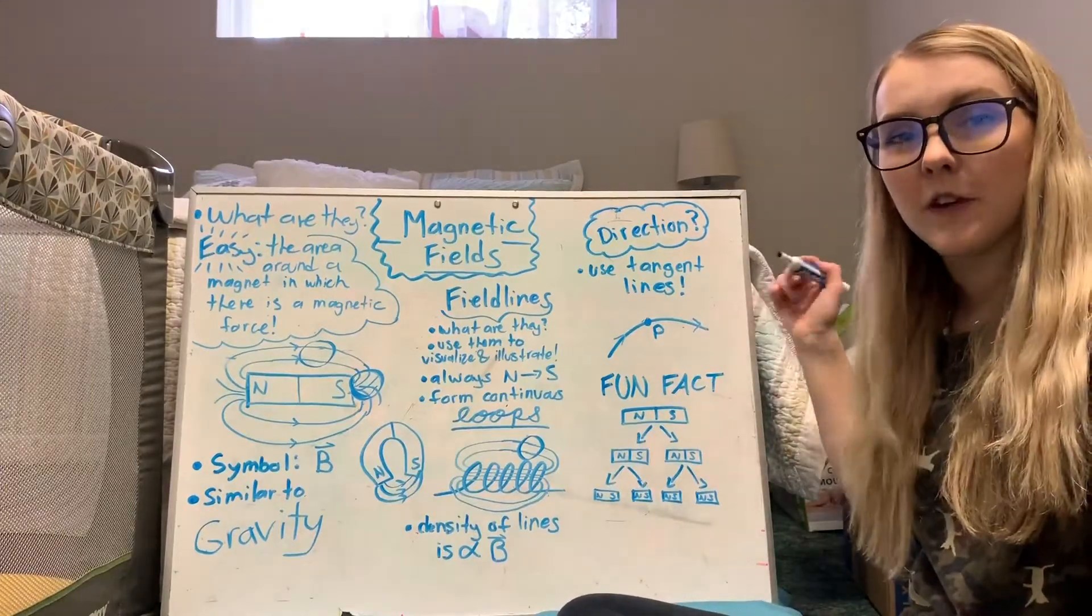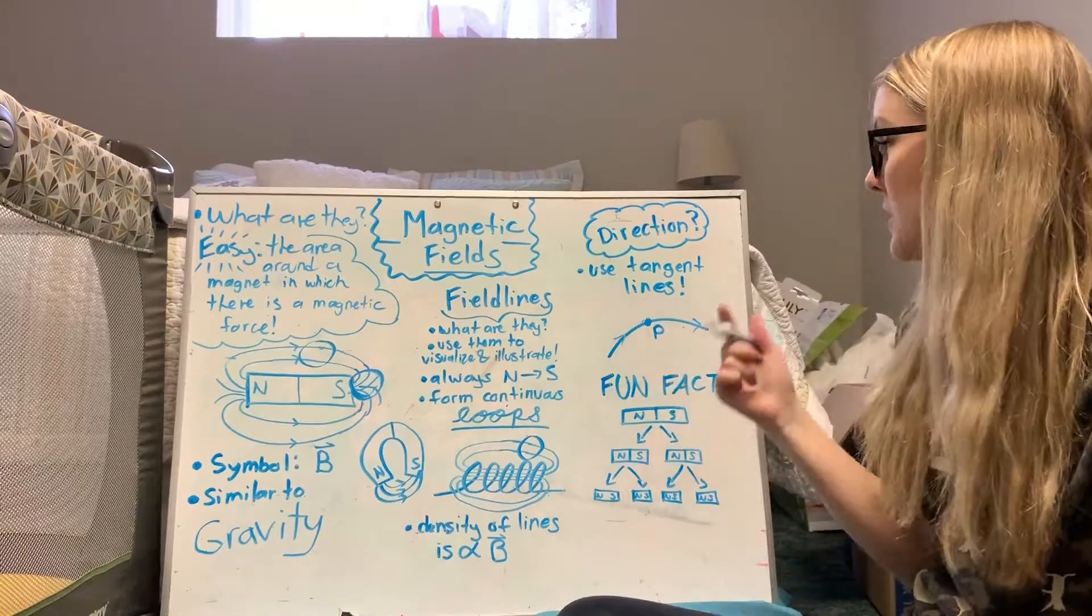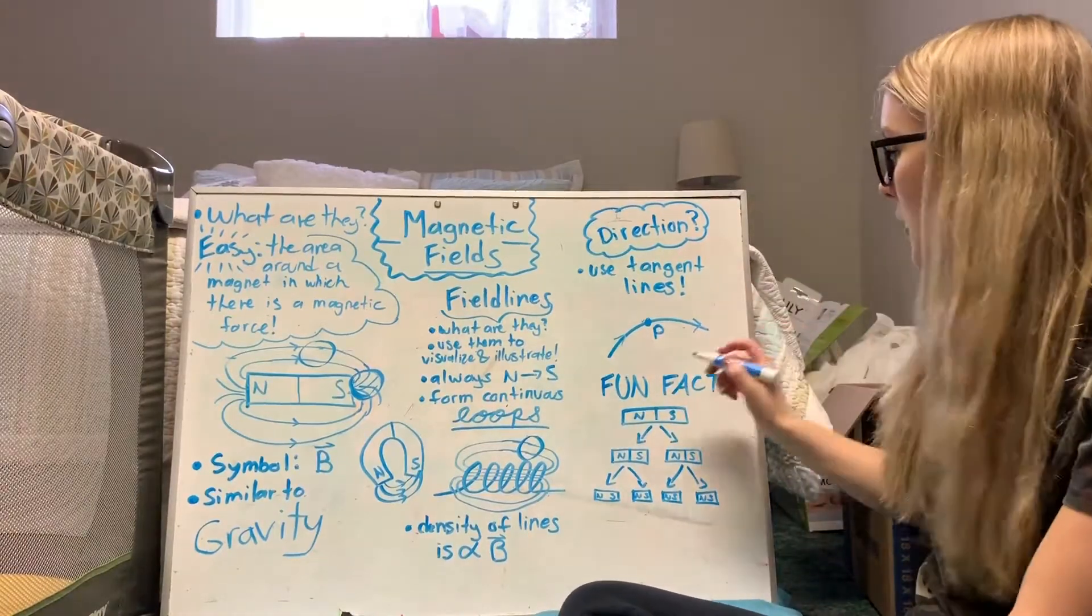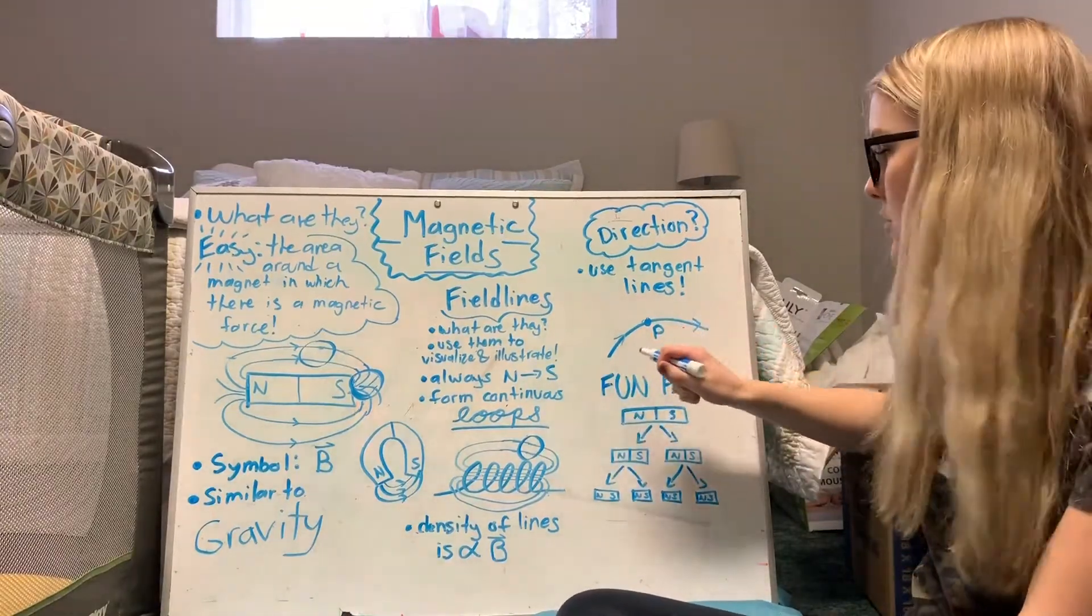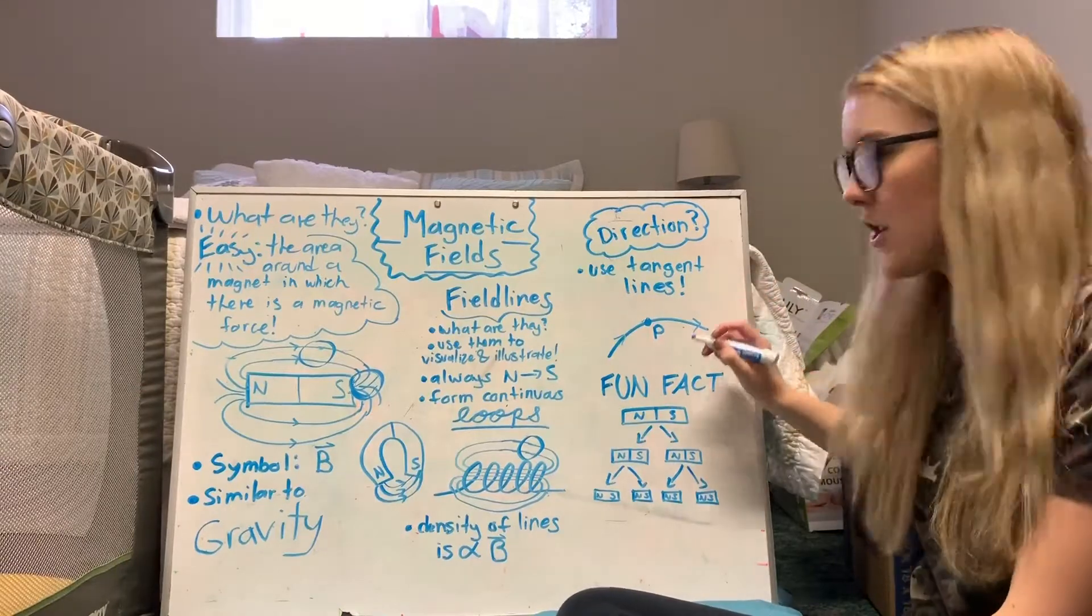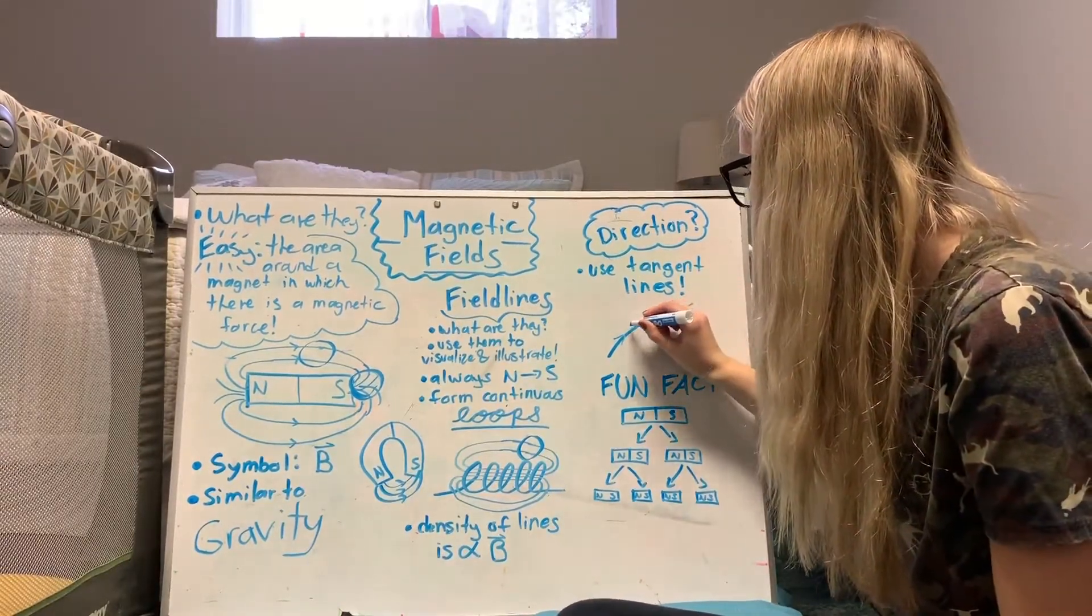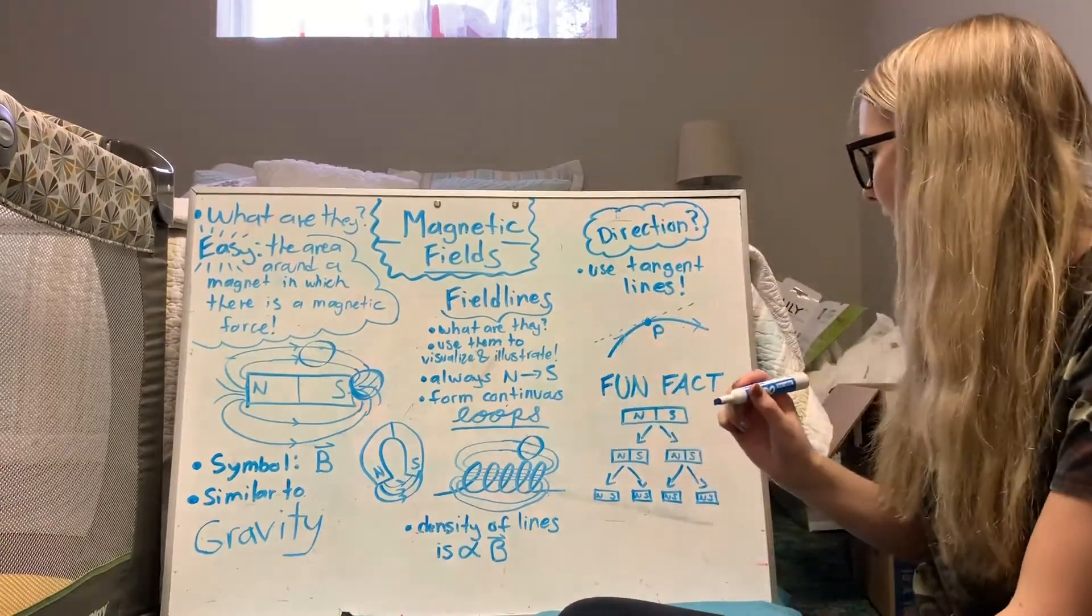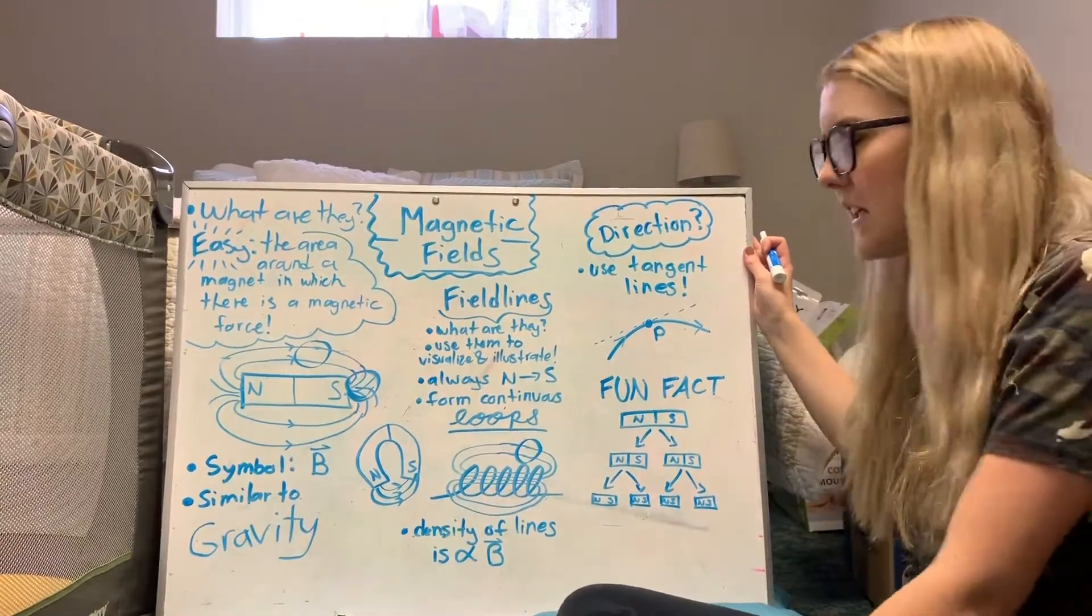And then if you need to know the direction of the magnetic field at a very specific point, you can use tangent lines to do that. So this is my example of a field line. There's some magnet that I haven't drawn, this is just one little field line that I've drawn, and if I want to know the direction at point P I would just draw a tangent line going right through that point just like that, and that can be useful if you need it.